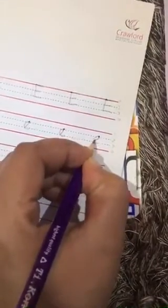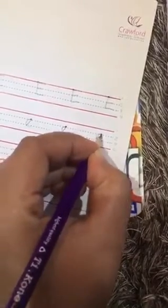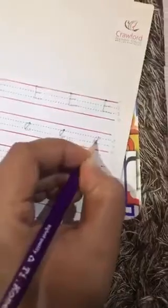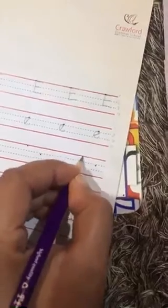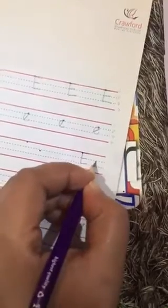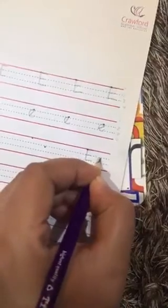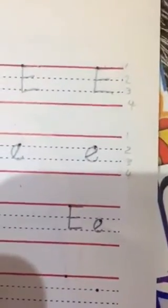Now for the small e: make a half circle, then a little circle, and a slash line. Make sure you make a little circle here. So again: capital E is a straight line with three sleepy lines, and small e is a half circle, a little circle, and a slash line.